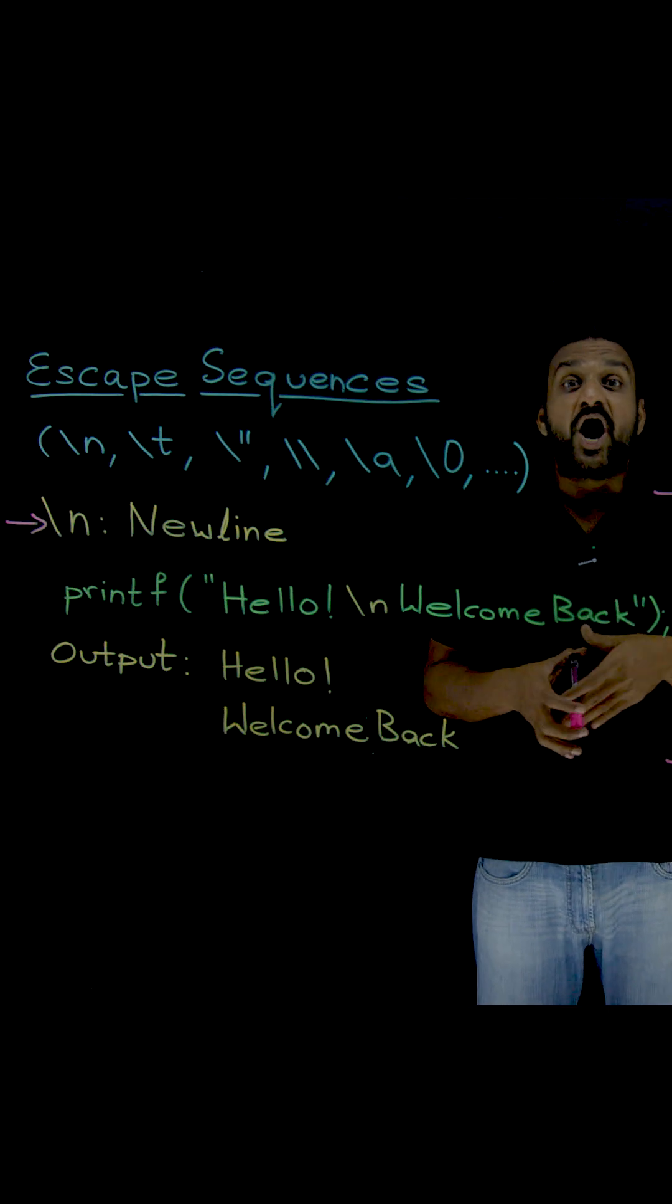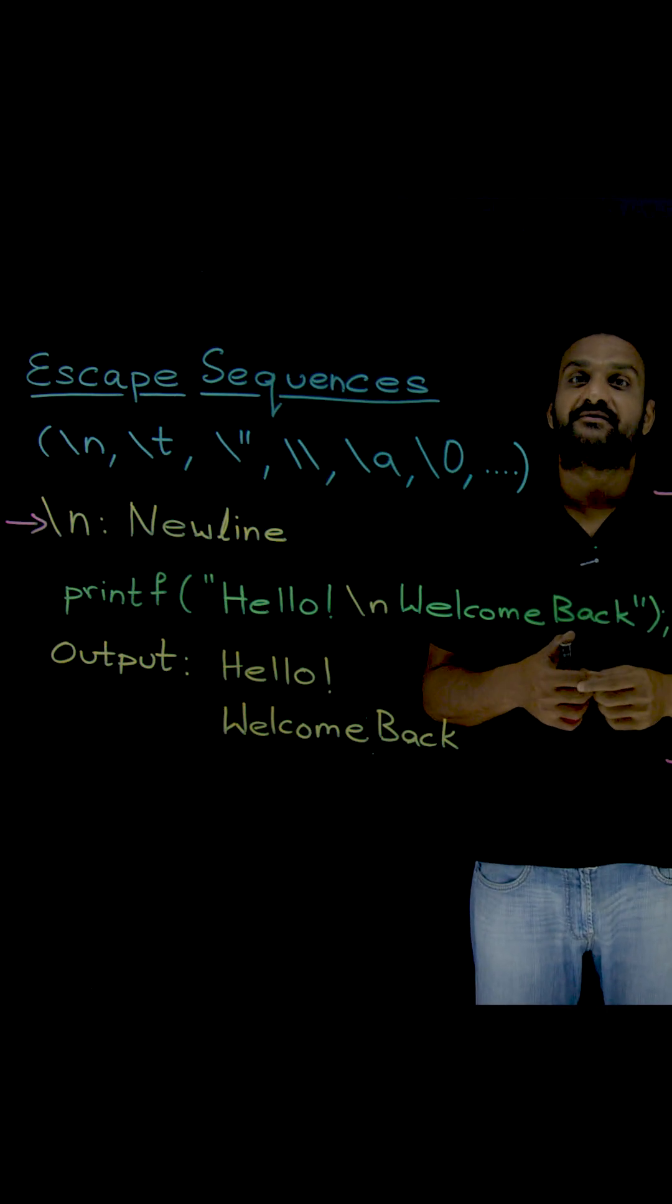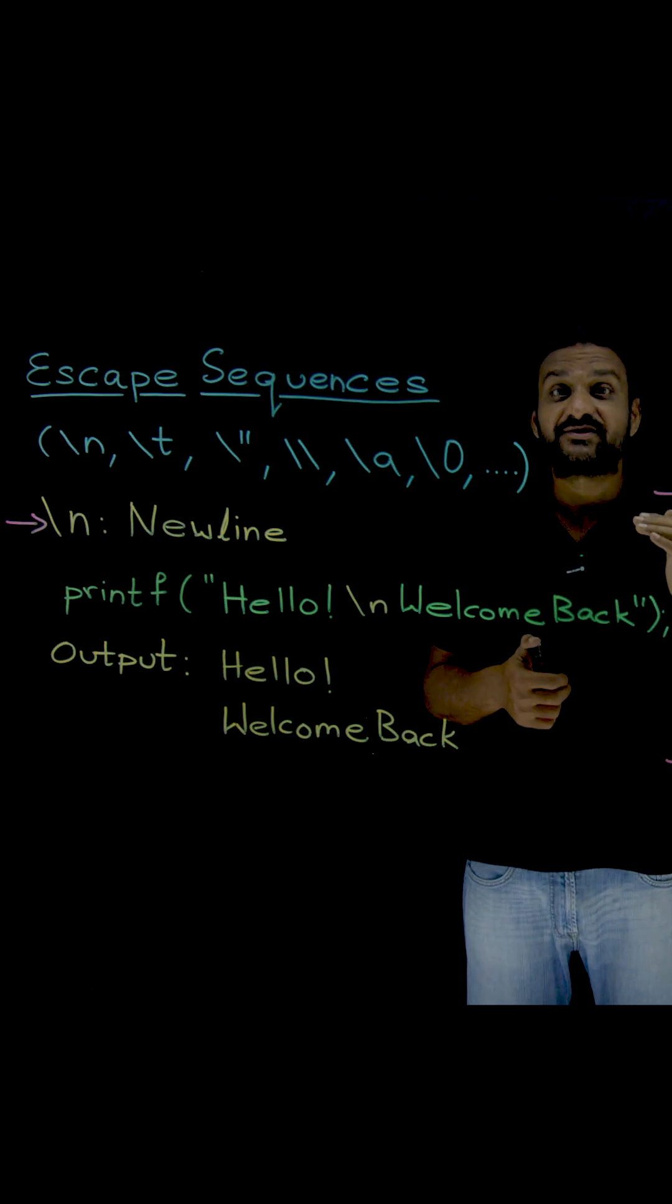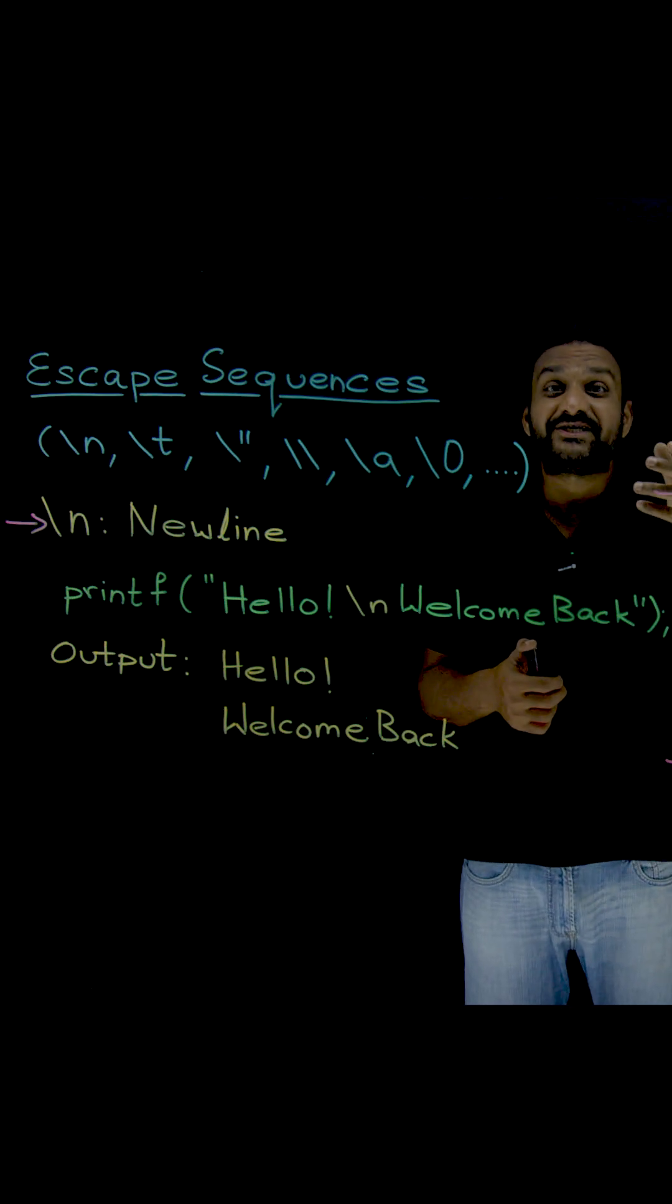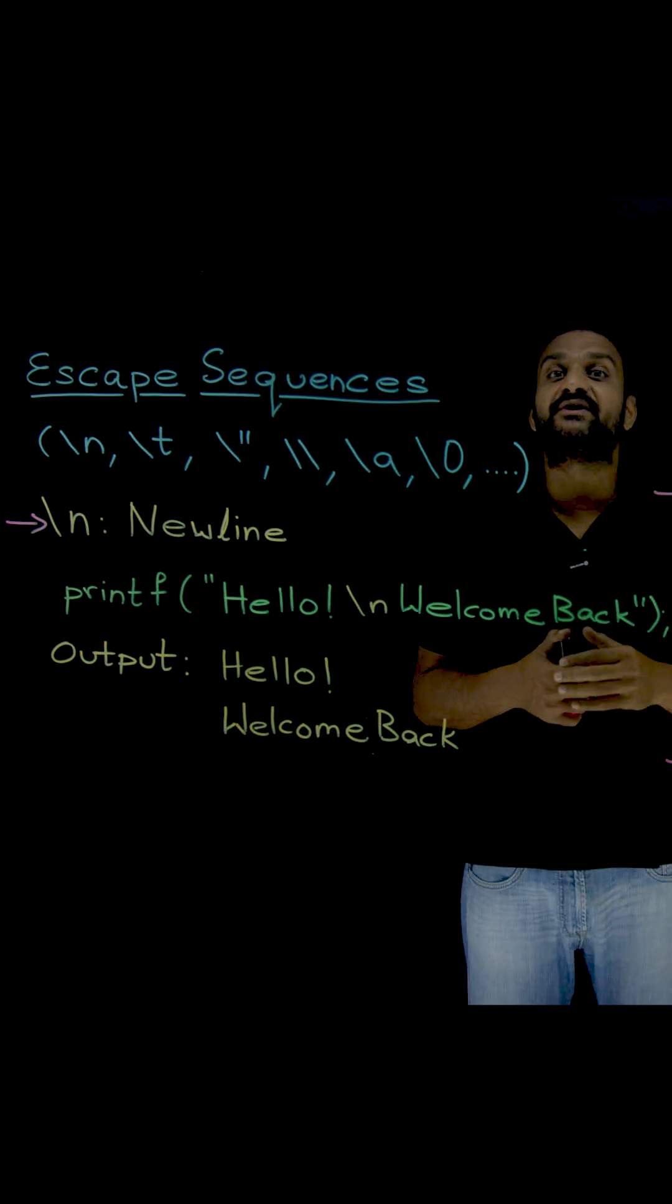So far, we have seen how to use printf to display text onto the screen. But what if we want to display the output in multiple lines? Or what if we want to display special characters like double quotes within the format string of the printf function?